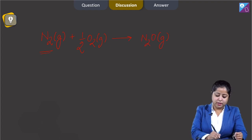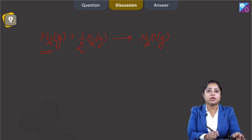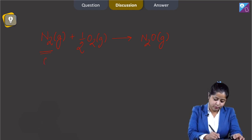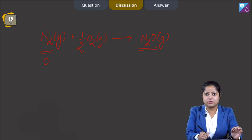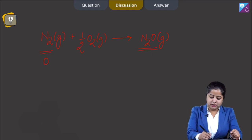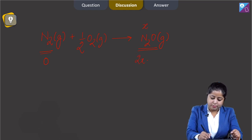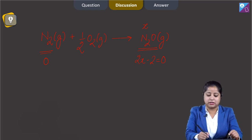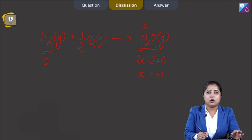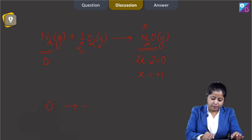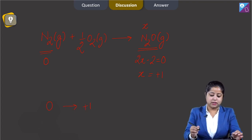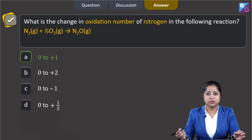Since we know that in N₂ the oxidation number of nitrogen is 0, and here in N₂O, let us calculate the oxidation number of nitrogen. I am taking the oxidation number of nitrogen as x. So, 2x − 2 = 0, since the oxidation number of oxygen here will be −2. That means x = +1. So, the oxidation number of nitrogen changes from 0 to +1, meaning the correct answer is option A.